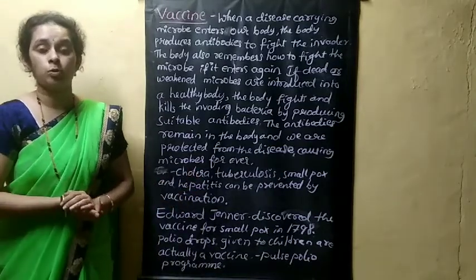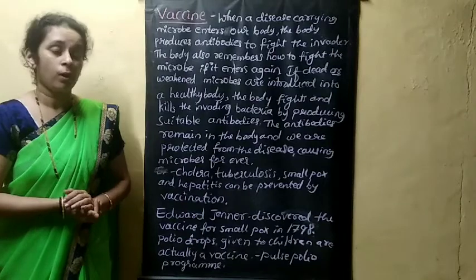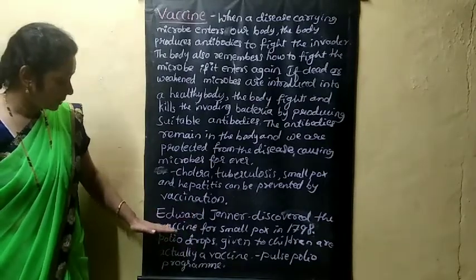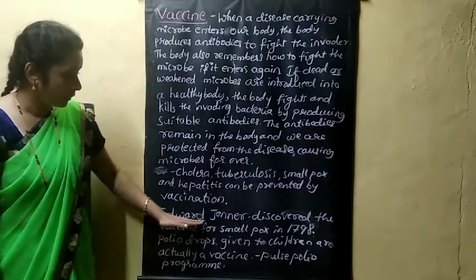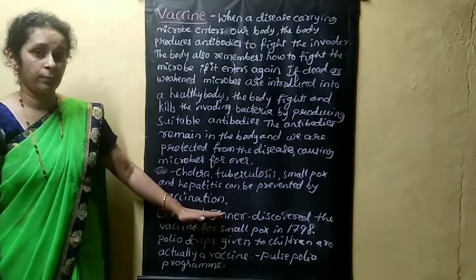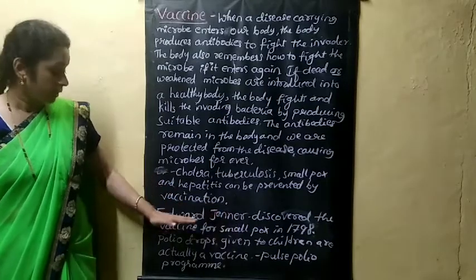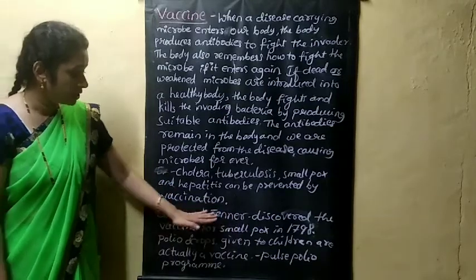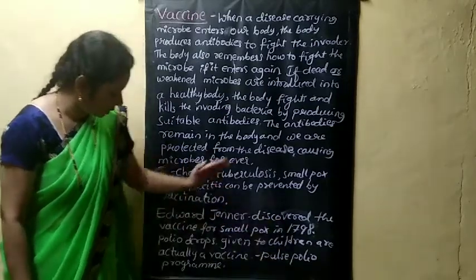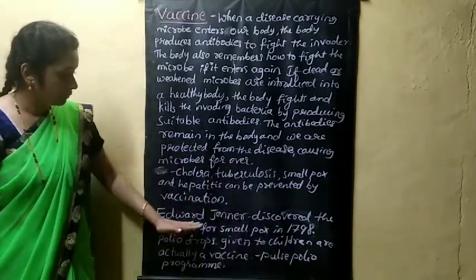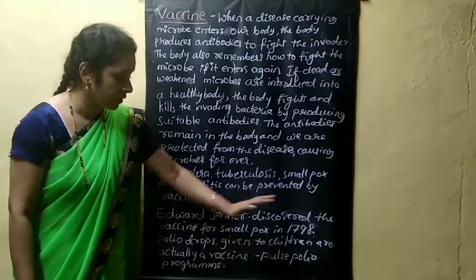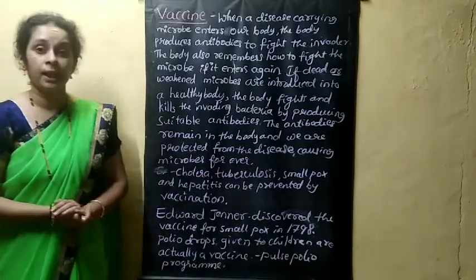The vaccine for smallpox was discovered by the scientist Edward Jenner. He discovered the vaccine for smallpox in the year 1798.